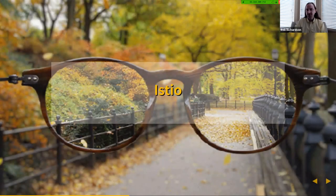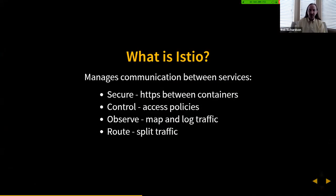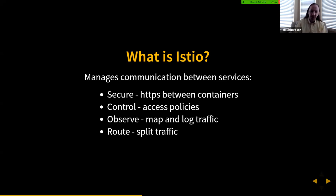Let's look at Istio. Istio is an example of a service mesh — specifically, an open source service mesh that runs on Kubernetes. It manages communication between services and really highlights four main pieces: secure, control, observe, and route. Because it stands between services, it can do things like HTTPS between containers, create access policies so only certain containers can access others, observe and log traffic, monitor uptime, and route traffic between different versions of a service.